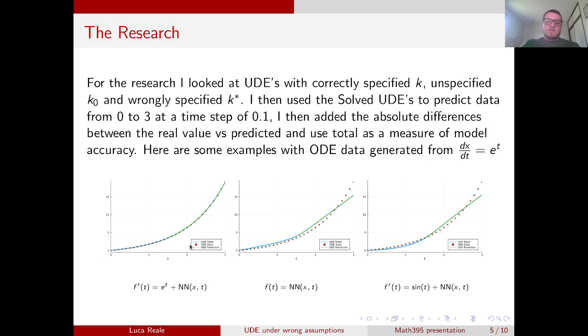So here we have a few examples. In red, we have the data generated from the following differential equation. So here, as a specification, we have e to the power of t, which is exactly the differential equation from which we generated the data from. Hence, we get a very good model performance.